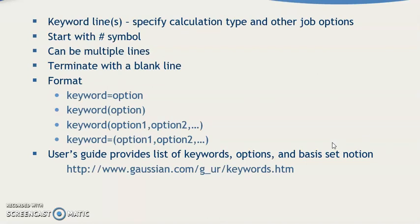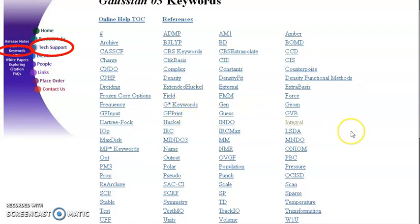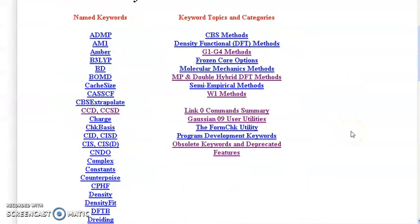Keywords lines specify calculation type and other job options. They start with a hash symbol, can span multiple lines, and terminate with a blank line. Keywords options for opt: keywords(options), keywords(option1, option2), and so on. The user guide provides a list of keyword options and basis sets. You can also go through online resources where a lot of information is available.